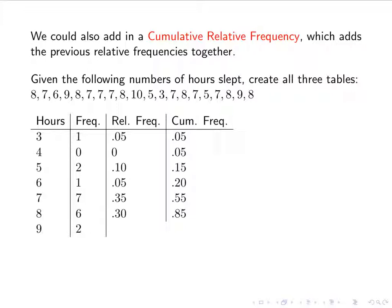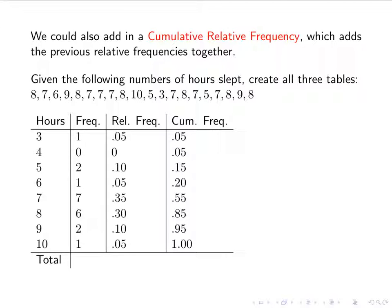For 9 hours, there were two people: 0.10, making the cumulative 0.95. For 10 hours, there was one person: 0.05. Notice 0.95 plus 0.05 gives 1.00. The cumulative frequency — adding all the relative frequencies — is 1.00. The total is 20, as we knew, and the relative frequency total is also 1.00.